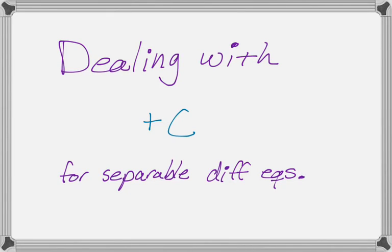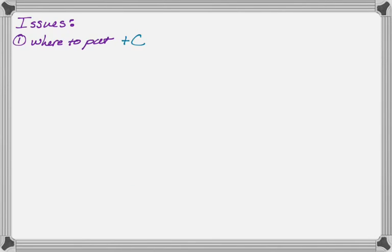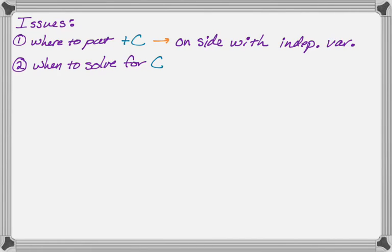In this video we're going to talk about how to deal with the plus C that shows up when you solve a separable differential equation. There are really two issues: first, where do we put plus C — that one's easy — and second, when do we want to solve for C, which is a little more complicated. You'll put plus C on the side with the independent variable, and as for when to solve for C, it kind of depends — you can do it at any point, there are just different times when it'll make your life a whole lot easier.